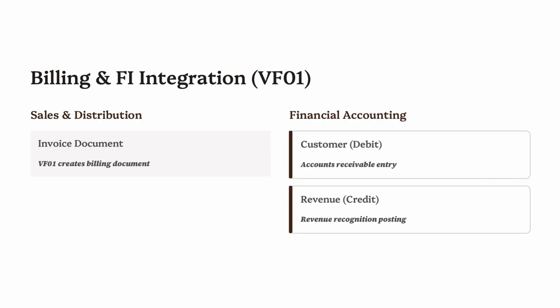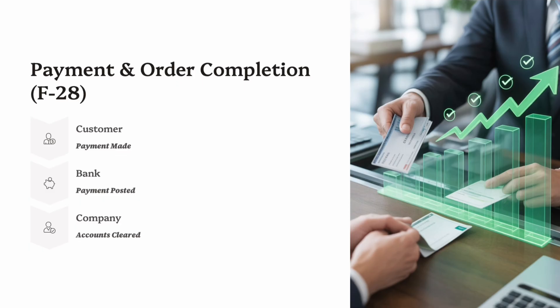SAP can automatically generate and send the invoice to the customer via PDF or EDI. For example, you create a billing document for delivery number 800123, the system posts to FI automatically, and the company's books now reflect the sale and the customer's outstanding payment. This step officially converts your goods delivery into recognized revenue in the system — the financial heart of O2C.